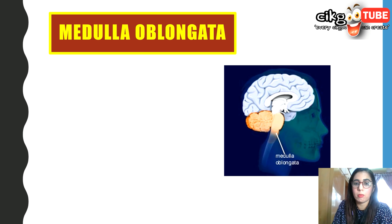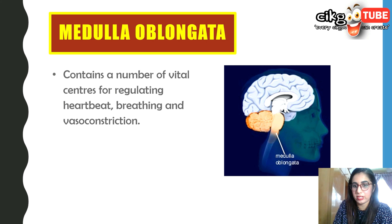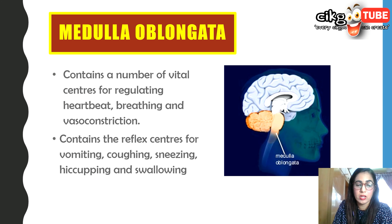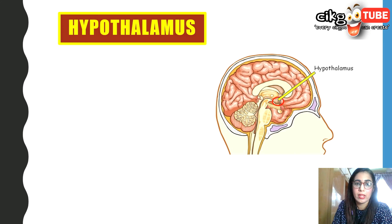The medulla oblongata contains a number of vital centers for regulating heartbeat, breathing, and vasoconstriction — whatever is involuntary. It also contains reflex centers for vomiting, coughing, sneezing, hiccups, and swallowing. These are all reflexes, things that you cannot consciously control.